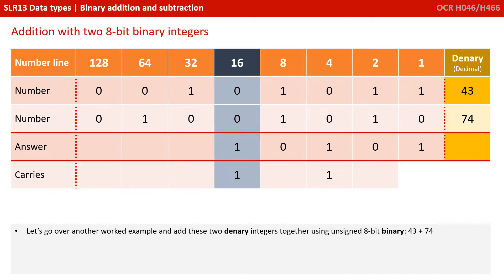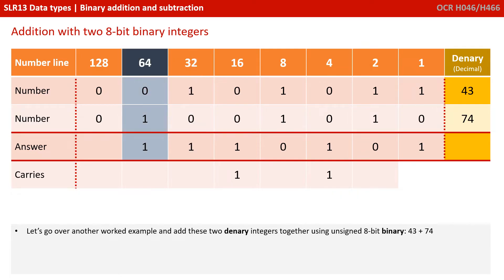0, 0 and the carry 1 is 1. Then 1 and 0 is 1; 0 and 1 is 1; and 0 and 0 is 0. We add up the columns that have the 1s: 64 plus 32 plus 16 plus 4 and 1, giving us 117.